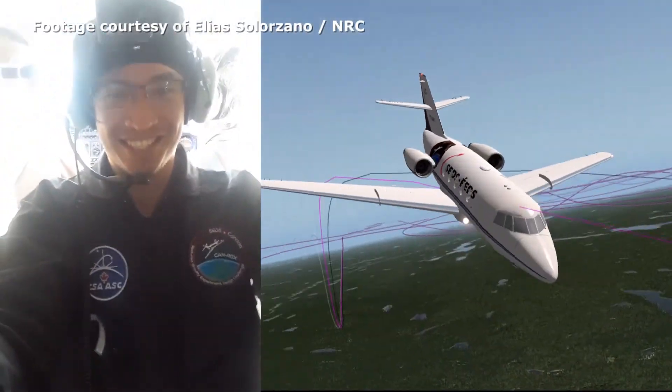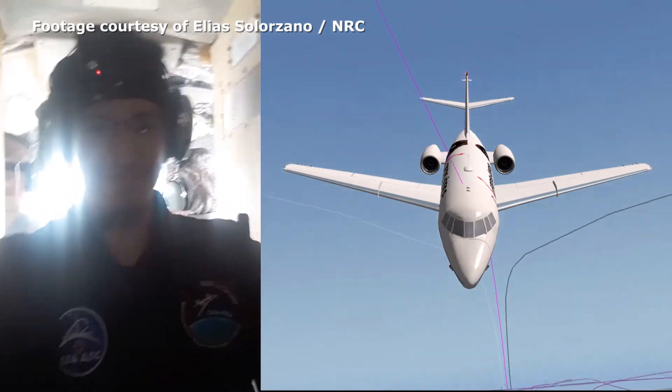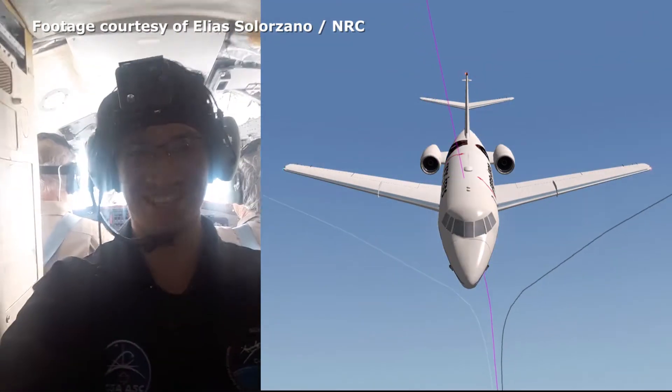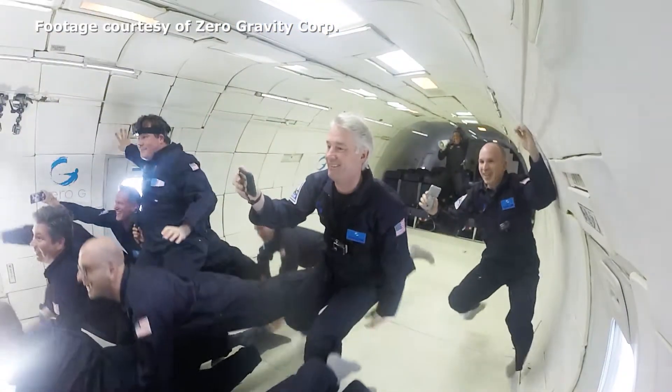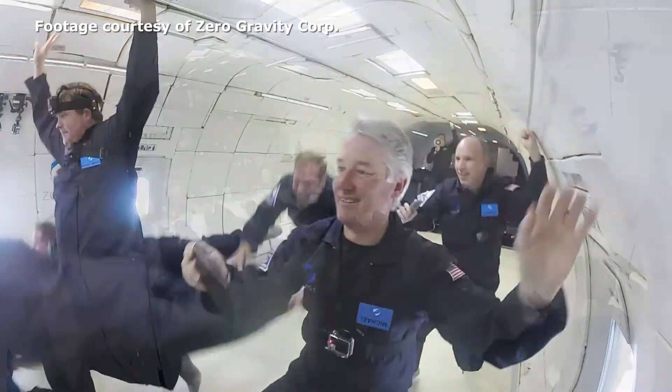This is called a parabolic flight path. With every parabola, zero-gravity conditions are created for about 20 to 30 seconds. The Zero-G flight crew organizes participants for all sorts of stunts, too.